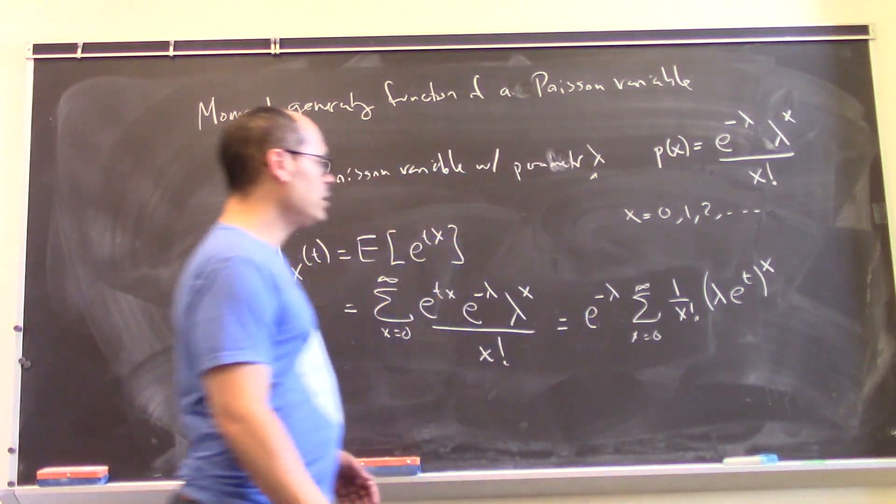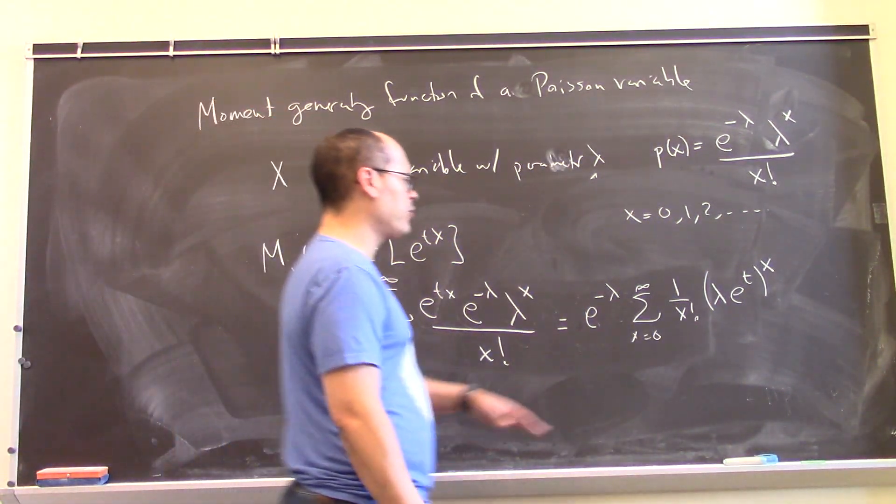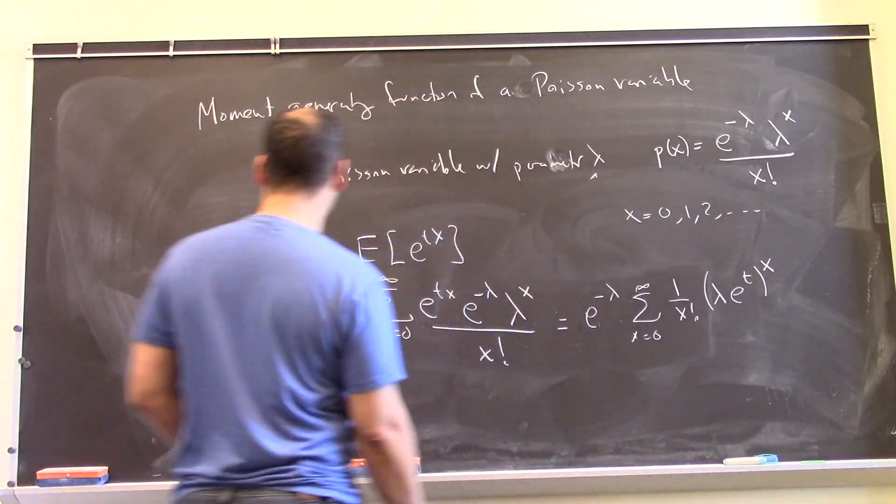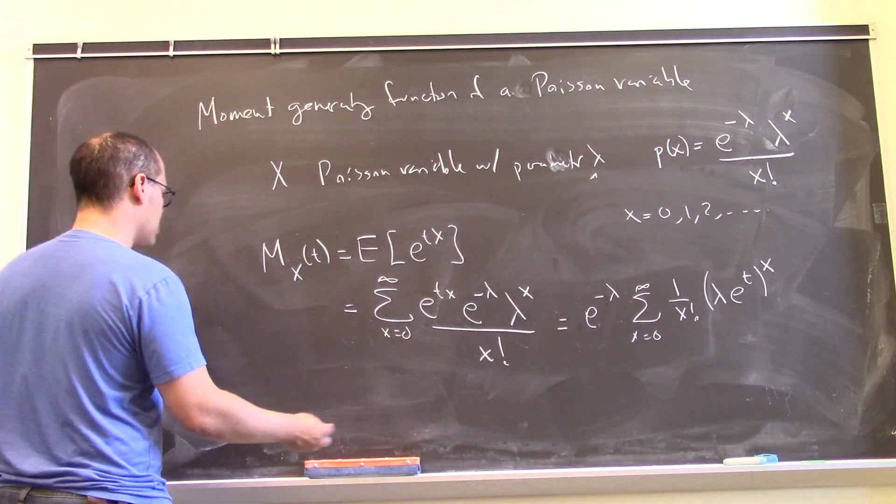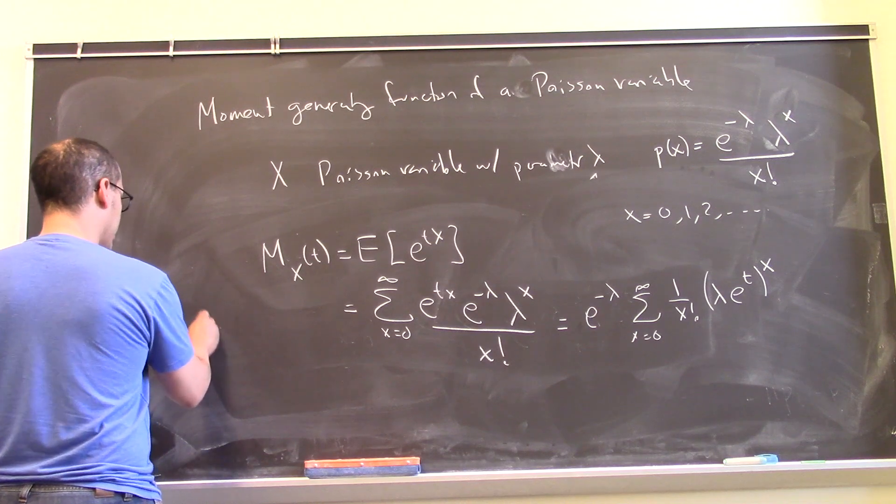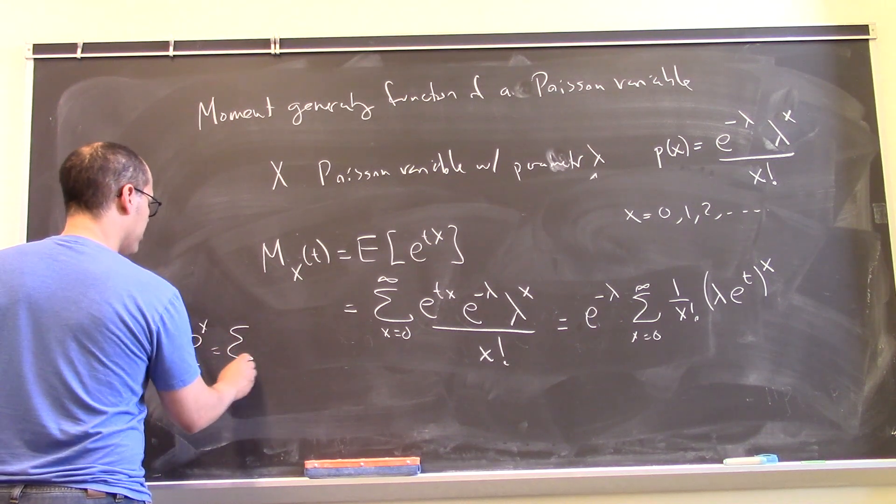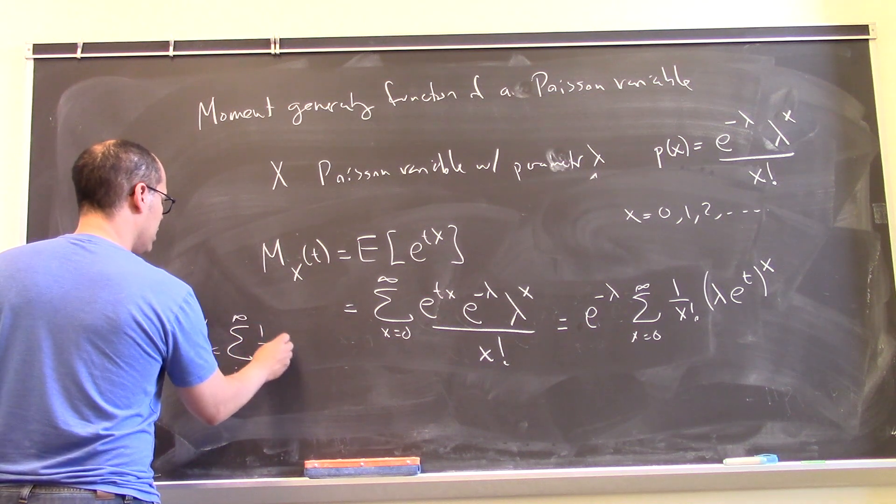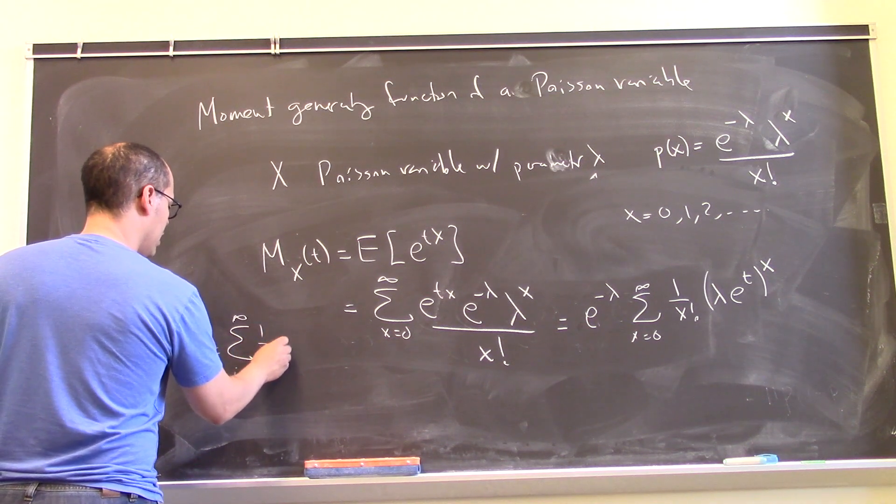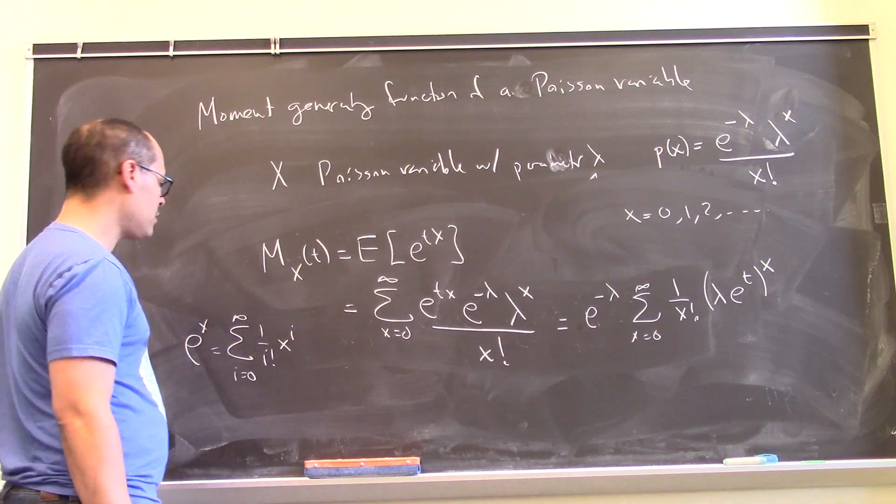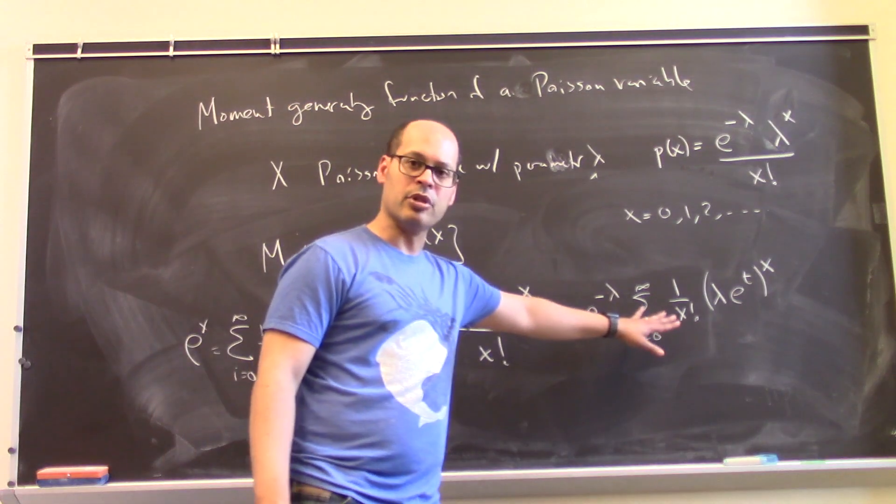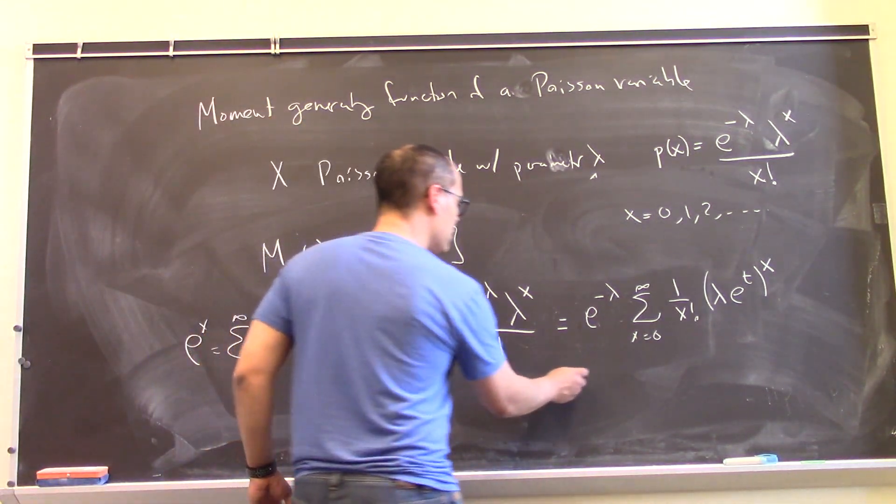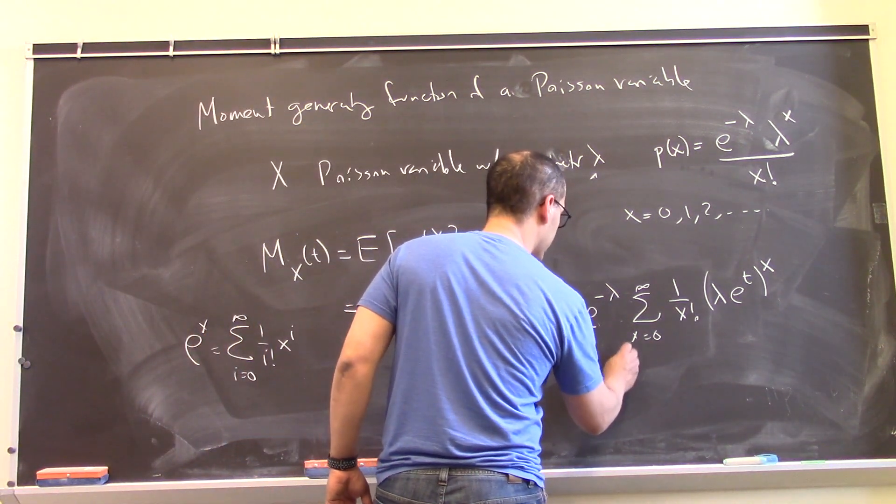All right, so this hopefully should look familiar, what we have here is the expression of the power series expansion of an exponential, right? Remember like e to the x is the sum from i equals 0 to infinity of 1 over i factorial x to the i. So my variables are a little bit different over there, but this is really an exponential. So let me realize it as such.